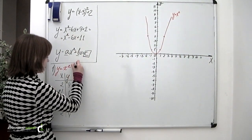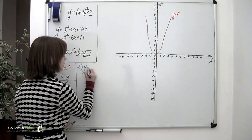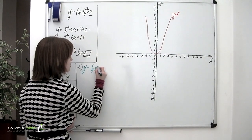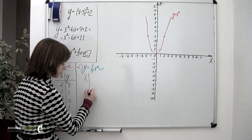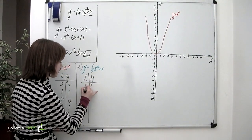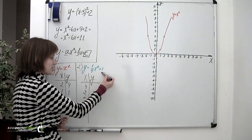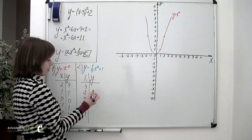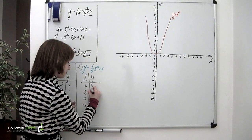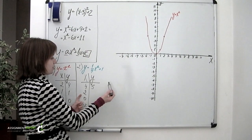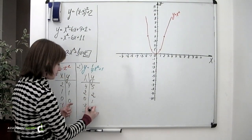Now let's move on to the second example. Our second parabola is y equals one-fourth times x squared plus 1. We'll form a coordinate table again. This time my x values are 4, 2, 0, negative 2, and negative 4. Substituting into the equation: 4 squared is 16 times one-fourth is 4, plus 1 equals 5; 2 squared is 4 times one-fourth equals 1, plus 1 equals 2; then 1; then 2 again; and 5 again.